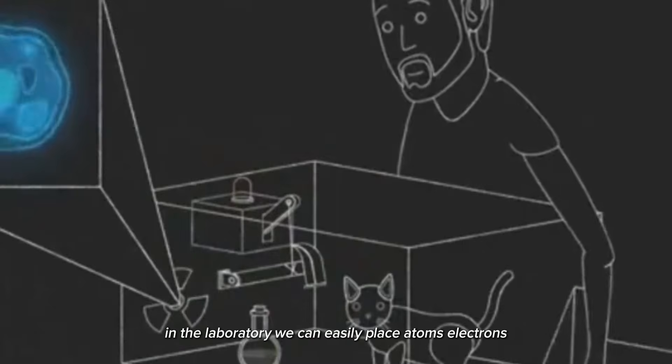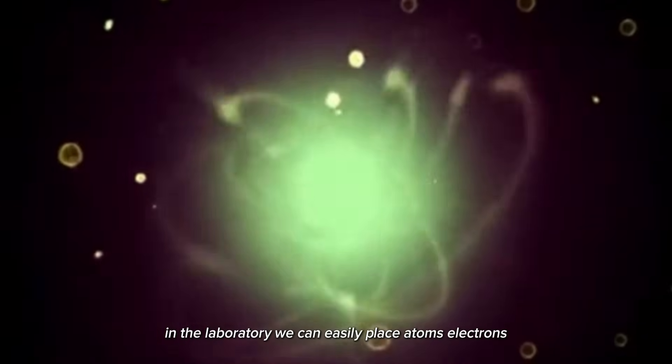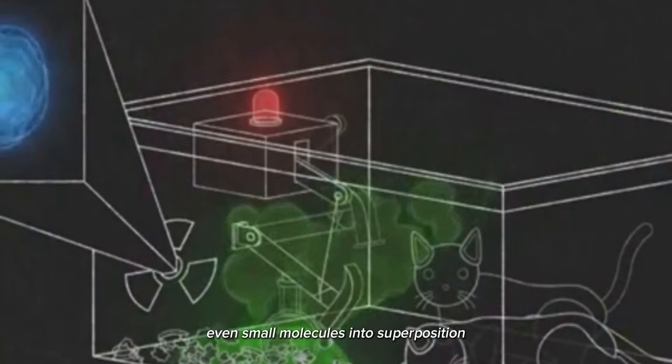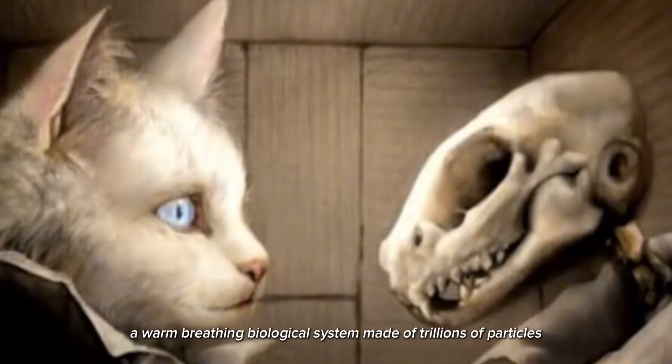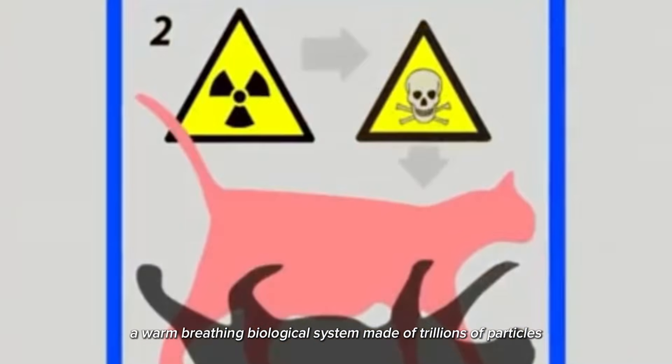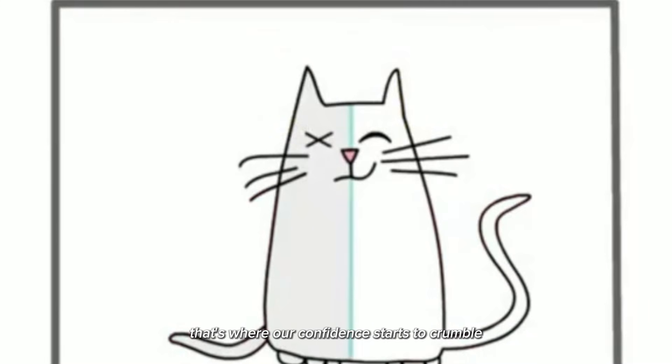In the laboratory, we can easily place atoms, electrons, even small molecules into superposition. We do it all the time. It's routine. But a cat? A warm, breathing, biological system made of trillions of particles? That's where our confidence starts to crumble.